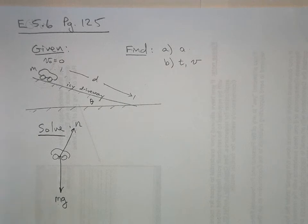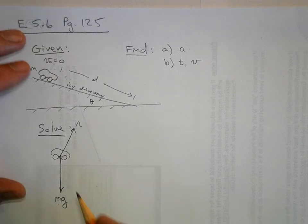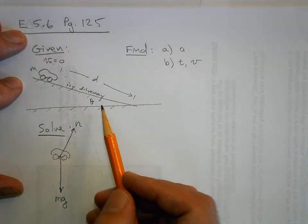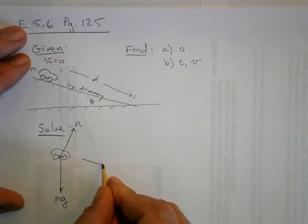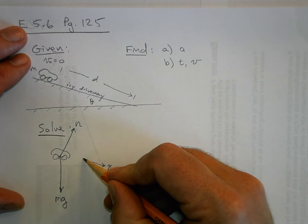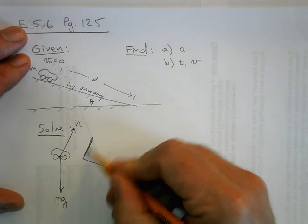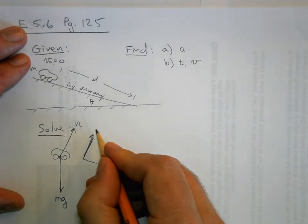So it's usually a good idea to make your x-axis, or sometimes your y-axis, but usually your x-axis in the direction of the known acceleration. We know this car is going to accelerate down the driveway, so I'm going to make down the driveway the positive x direction. And then of course the y direction will be perpendicular to the x direction, or normal.